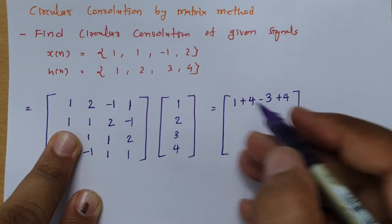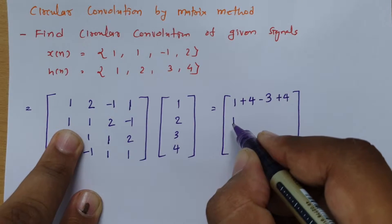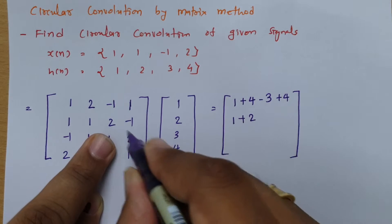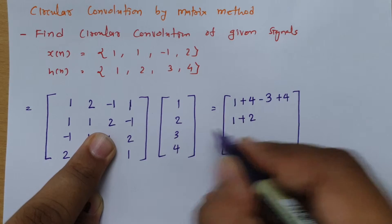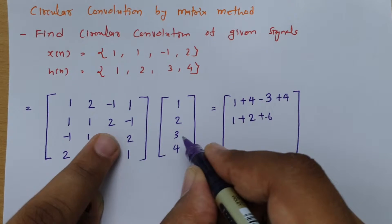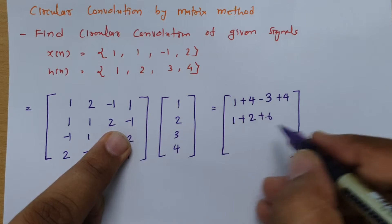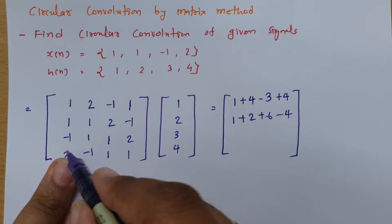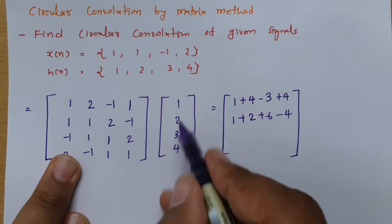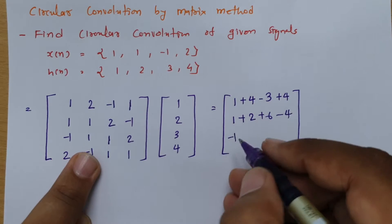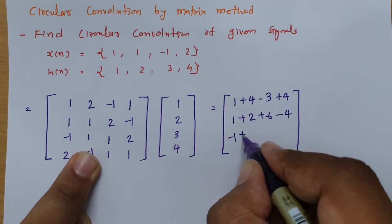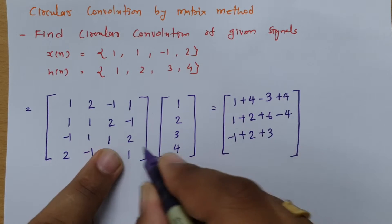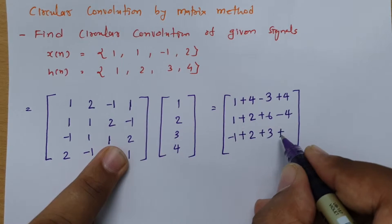Second row: 1 times 1 is 1, plus 1 times 2 is 2, plus 2 times 3 is 6, plus minus 1 times 4 is minus 4. Third row: minus 1 times 1 is minus 1, plus 1 times 2 is 2, plus 1 times 3 is 3, and 2 times 4 is 8.